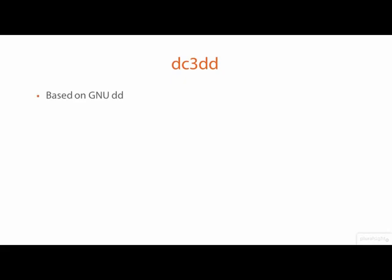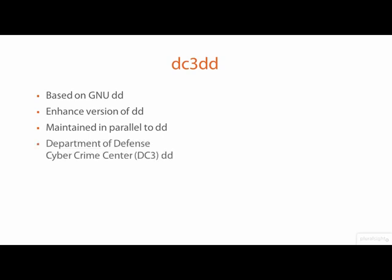DC3DD is a Forensic Image Acquisition and Burning Tool based on the GNU DD Copying Utility. DC3DD is not an independent program forked from DD, but instead an enhanced replacement maintained in parallel with DD. This alignment means that updates to DD are also applied to DC3DD. The name DC3DD is short for Department of Defense Cybercrime Center DD, a name given by the author who was working for DC3 when DC3DD was created.